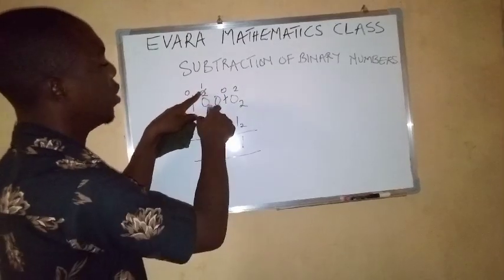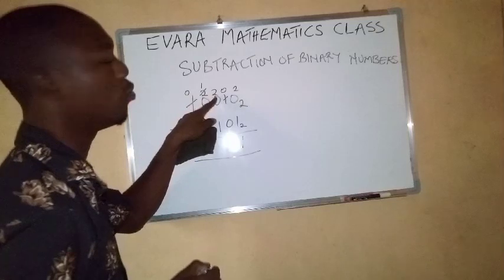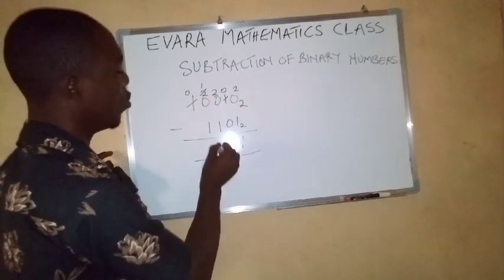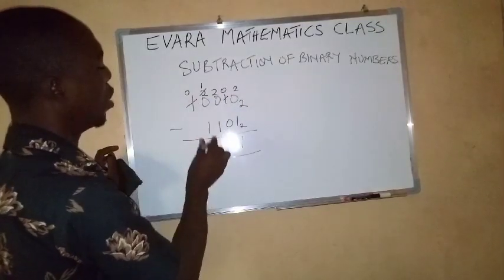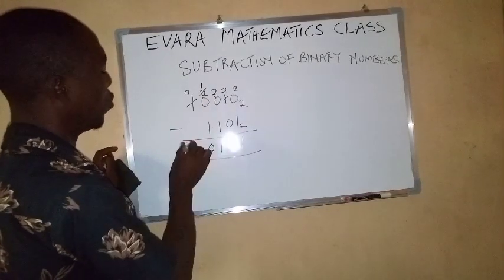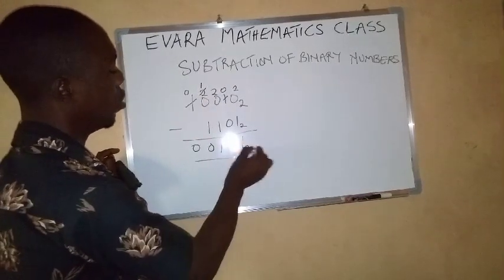That one that you borrow, you bring it here, it will become 2 again. So 2 minus 1 is 1. 1 minus 1, 0. This one is 0, base 2.